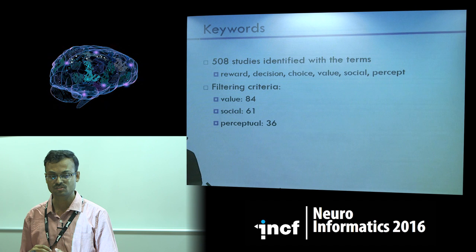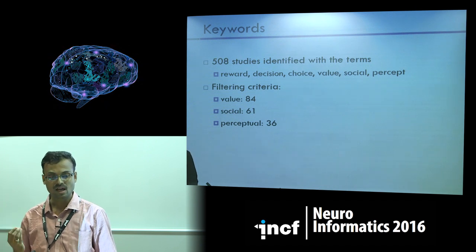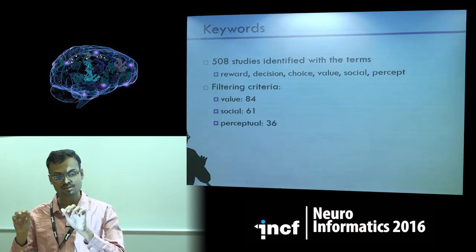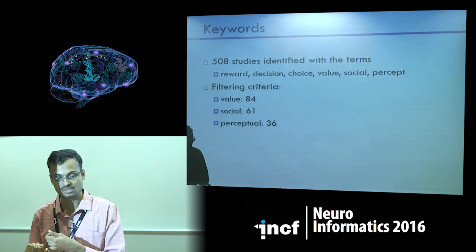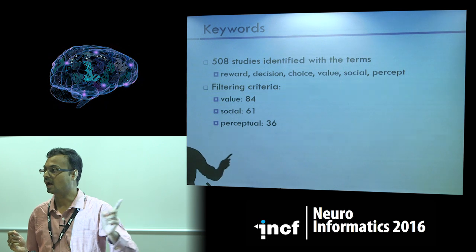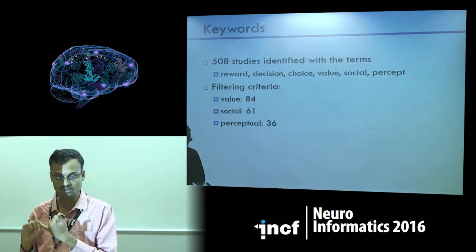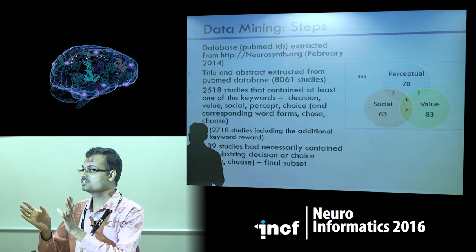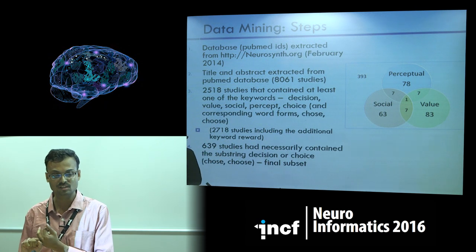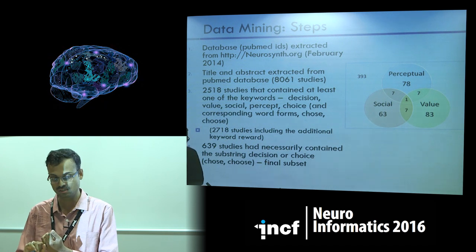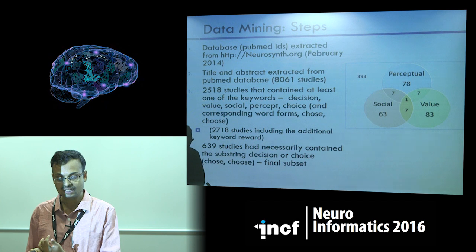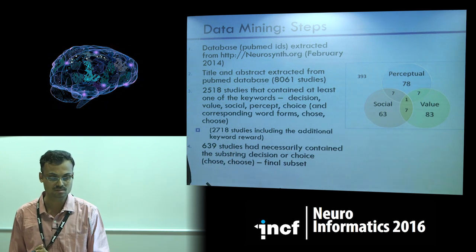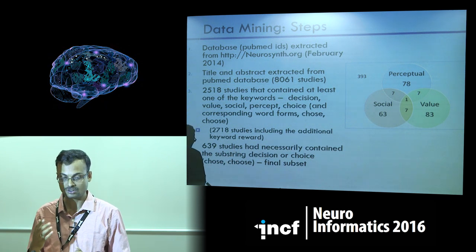Just as an illustration: picking up words from abstracts, I get 84 studies with the term 'value', 61 papers with 'social', and 36 with 'perceptual'. I used a filtering criterion requiring at least one of these terms: reward, decision, choice, value, social, or percept. This is the final data: there were 8,061 studies in the database. About 2,500 had at least one of these terms. Including reward as an additional term added just 200 more studies. After filtering, I got 639 studies.